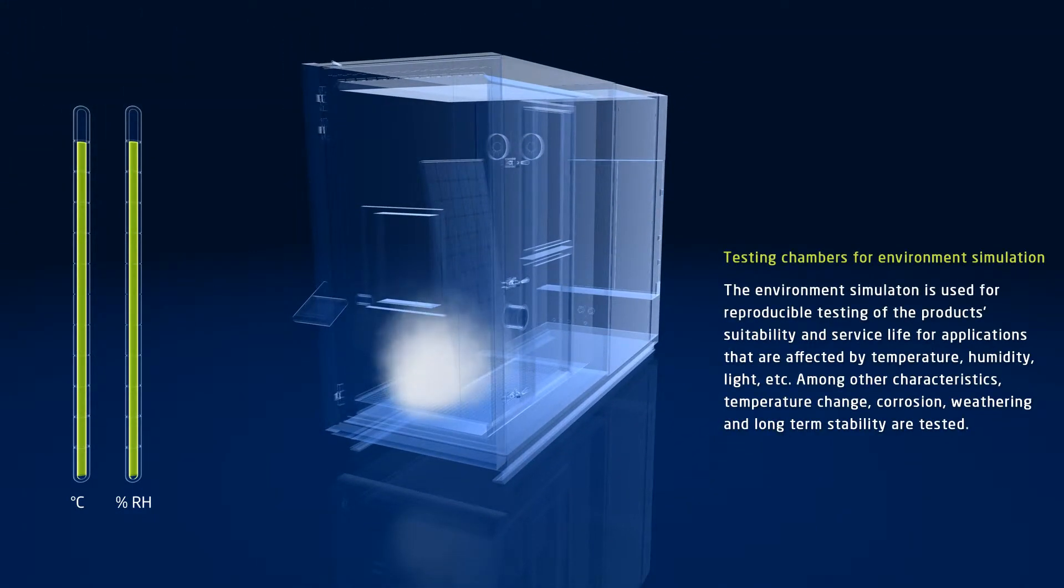The environment simulation is used for reproducible testing of the product's suitability and service life. These tests take the effects of rapid temperature changes, humidity and light into consideration. Corrosion and the effects of weathering can also be simulated and these situations can also be reproduced perfectly for comparable results. This is the best possible way to ensure the quality of the products.